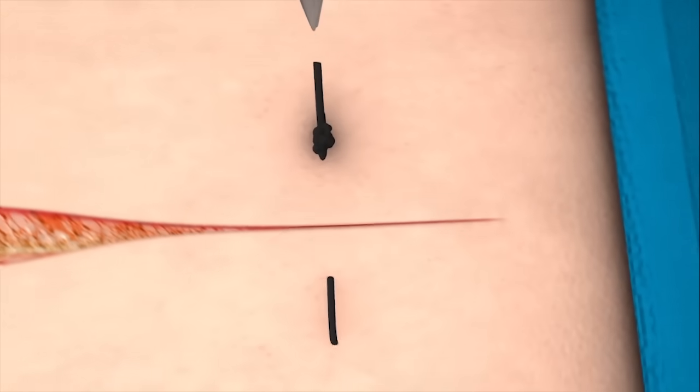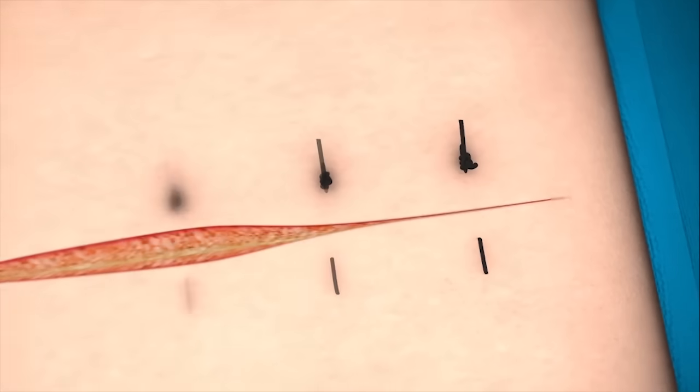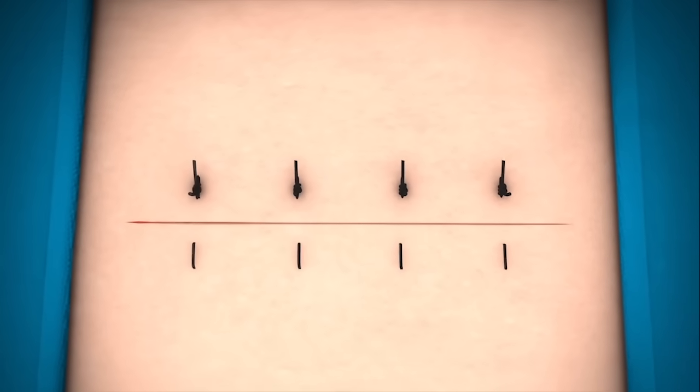Trim the ends and then continue with equally spaced vertical mattress sutures until the wound is closed.